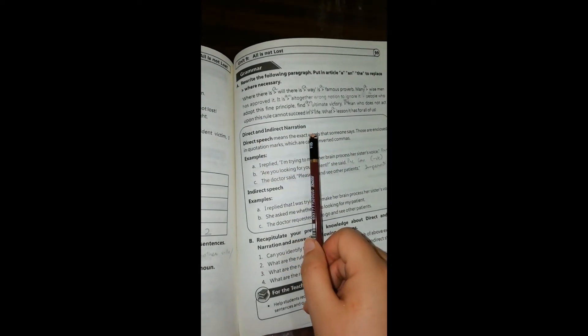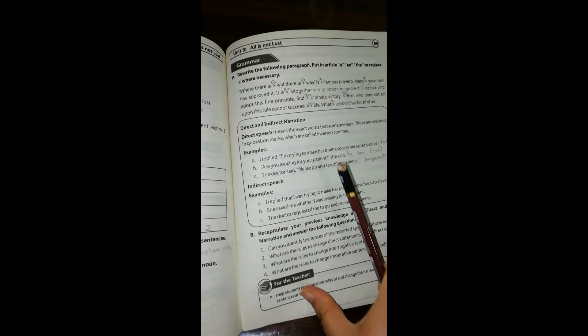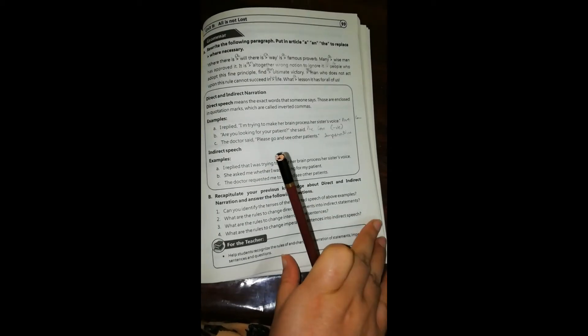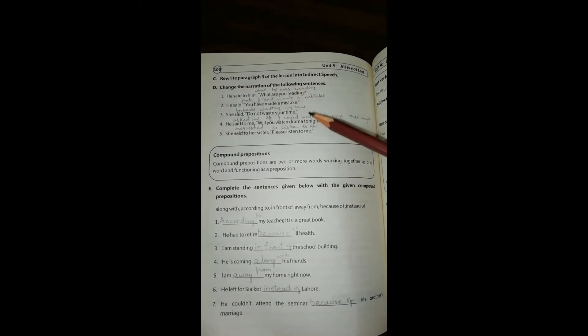Then we have direct and indirect narration. Direct and indirect is a detailed topic, I will make a separate video on that because I have to give a lot of information. We have to discuss so many rules based on it. Though I have solved this exercise, I would recommend that you should watch another video for that, which I would upload later based on narrations.